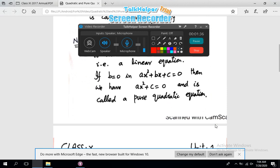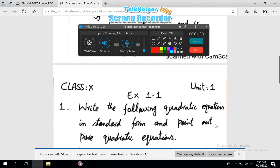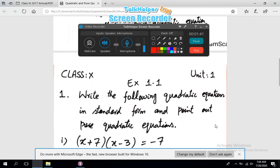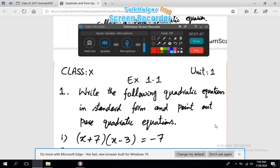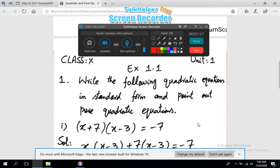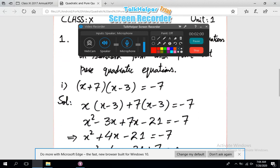pure quadratic equation, and linear equation. Now we select one question from the book of mathematics grade 10, exercise 1.1, question number 1. It says write the following quadratic equations in standard form and point out pure quadratic equations. We select part number 1: (x + 7)(x - 3) = -7. We start our solution.